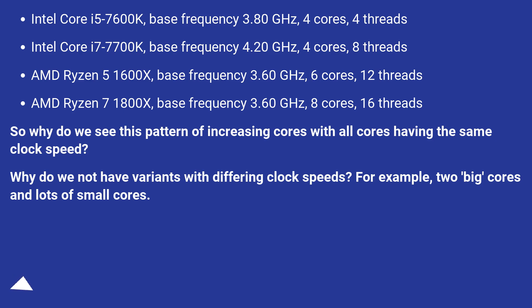So why do we see this pattern of increasing cores with all cores having the same clock speed? Why do we not have variants with differing clock speeds? For example, 2 big cores and lots of small cores.